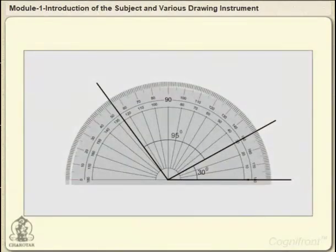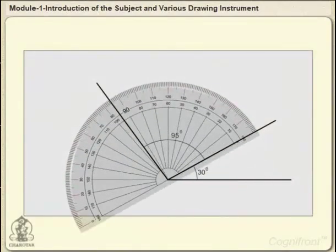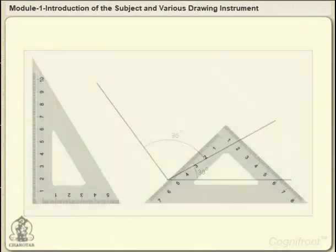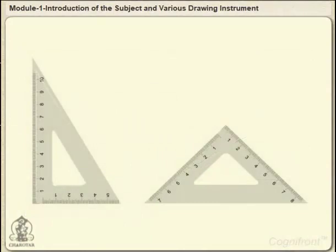Protractor is used to measure and layout angles. Another tool is set squares, also known as triangles. They come in flavors of 30-60-90 degrees and 45-45-90 degrees.